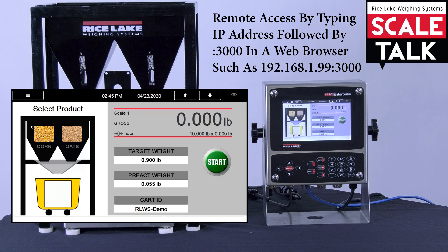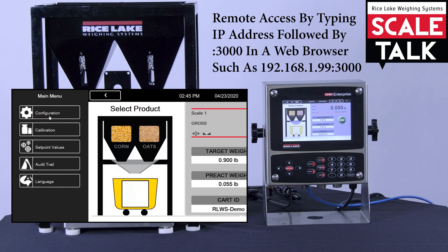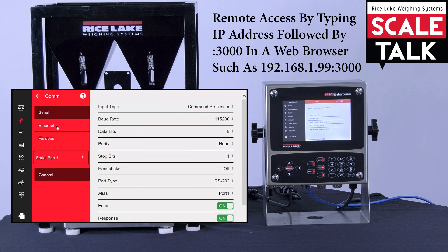Once connected, you can access and troubleshoot their configuration remotely. As you can see here, we can enter configuration and now go to Communication. And we're looking at Ethernet to see why their Wi-Fi Direct is not functioning.